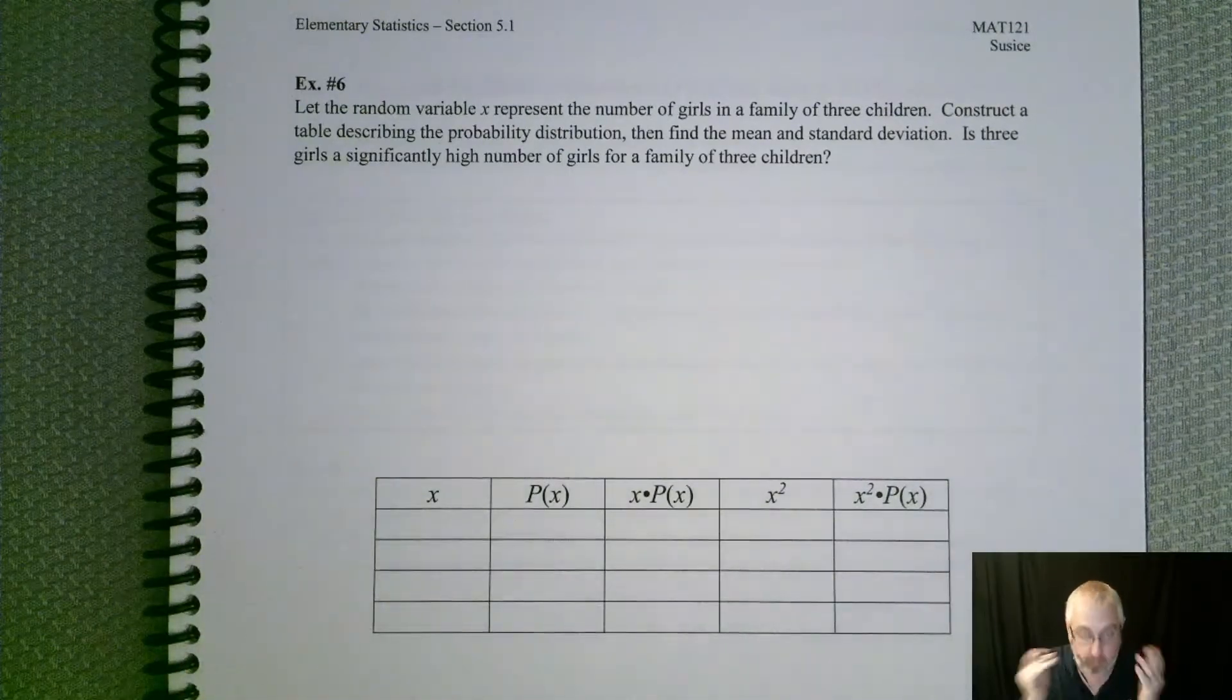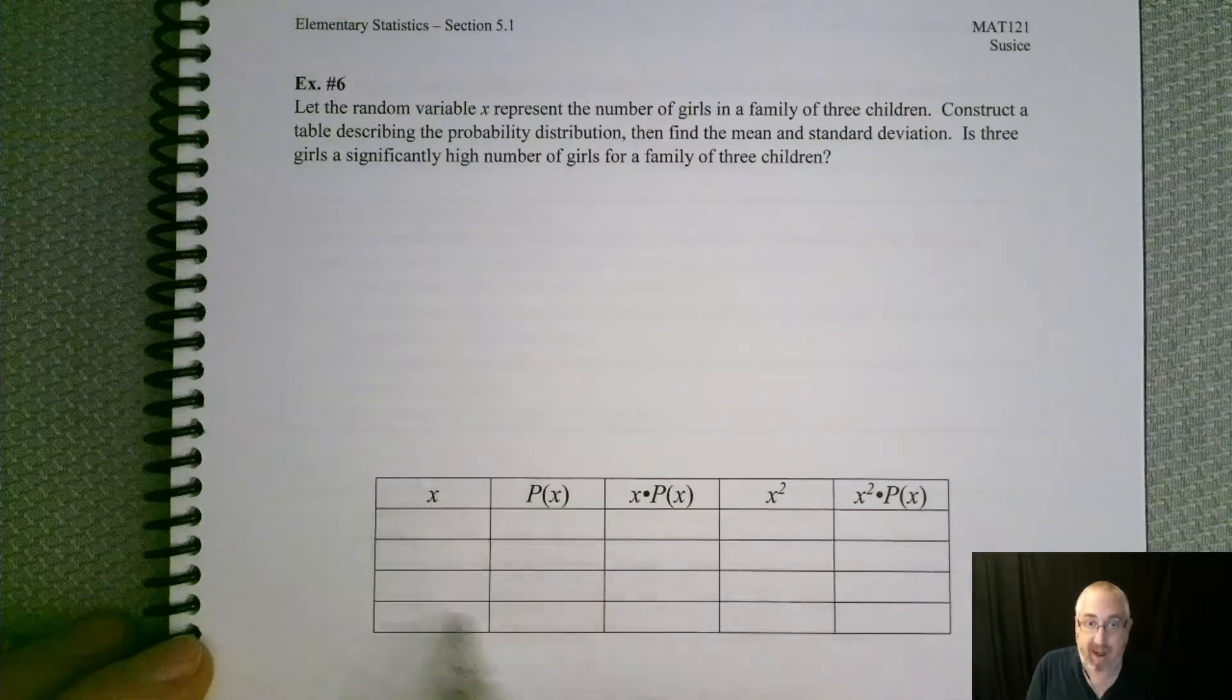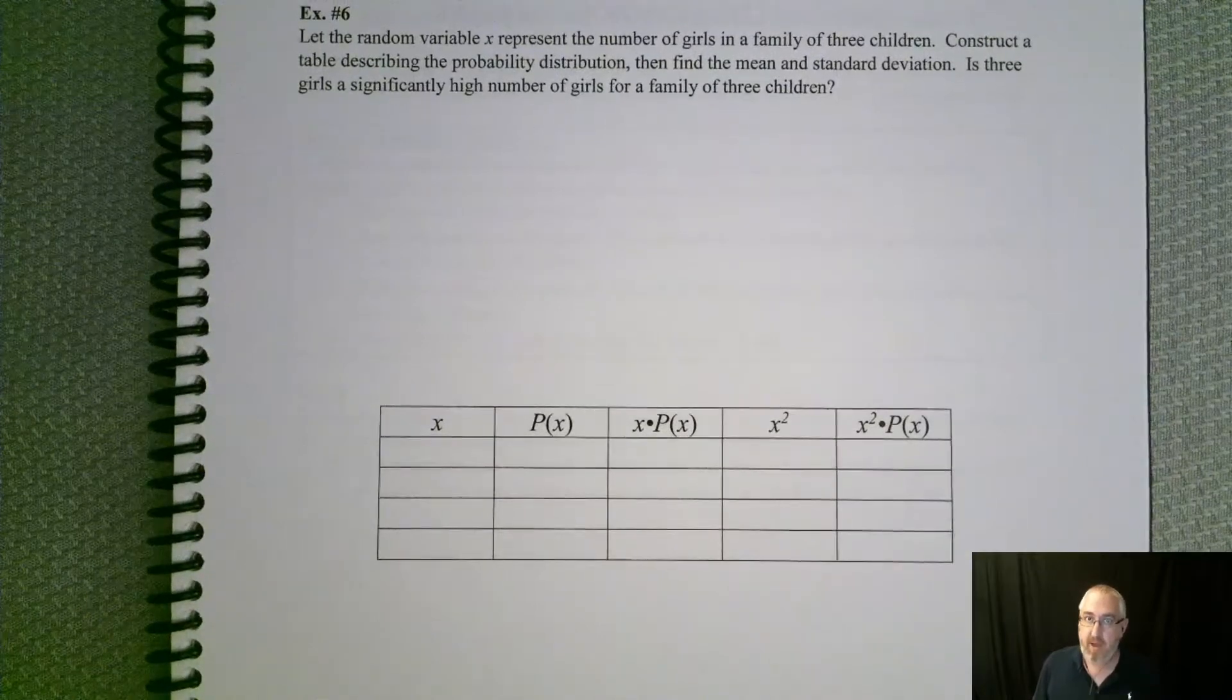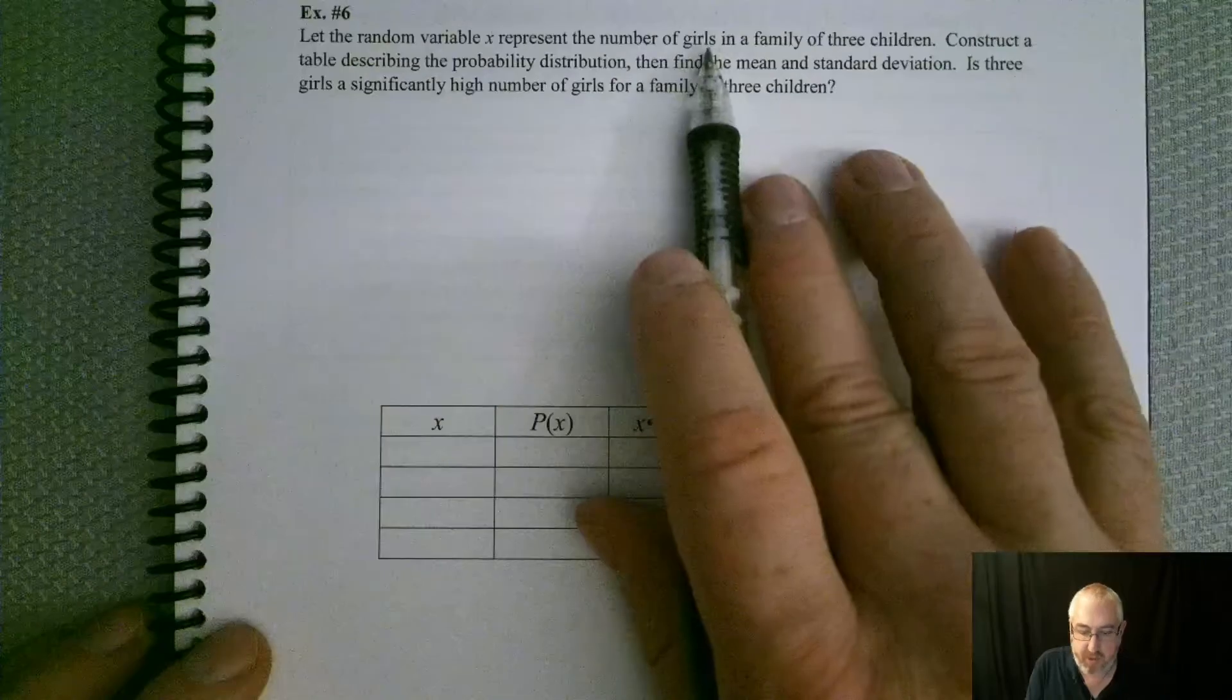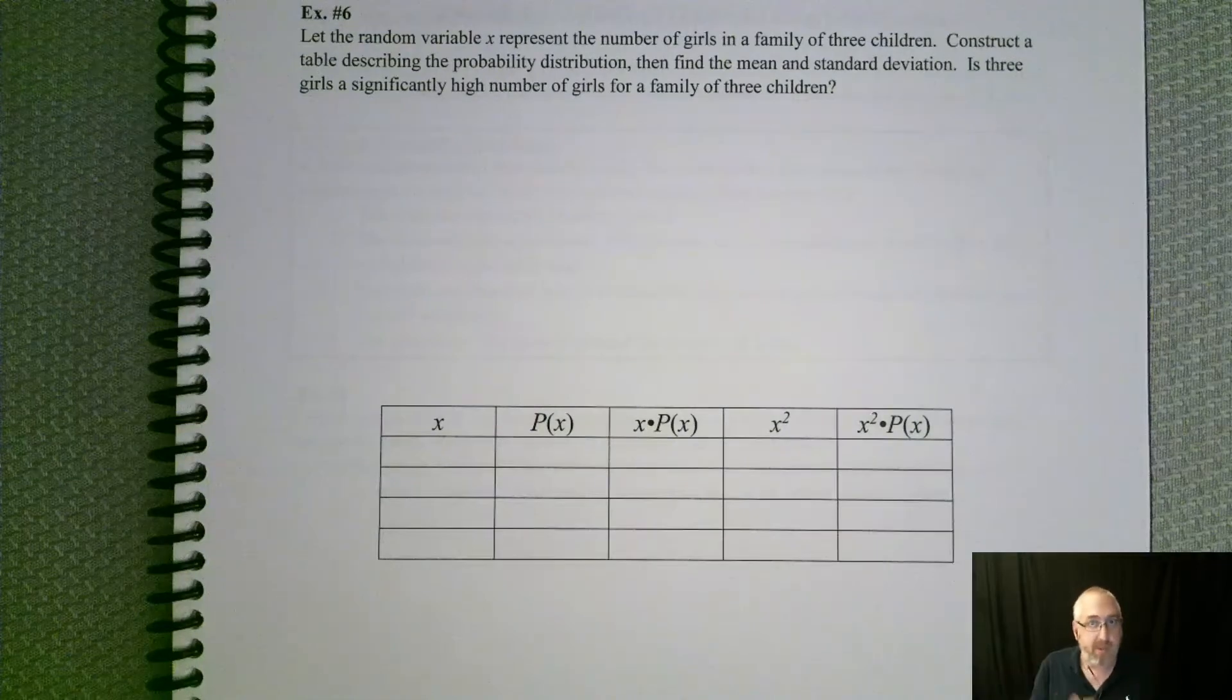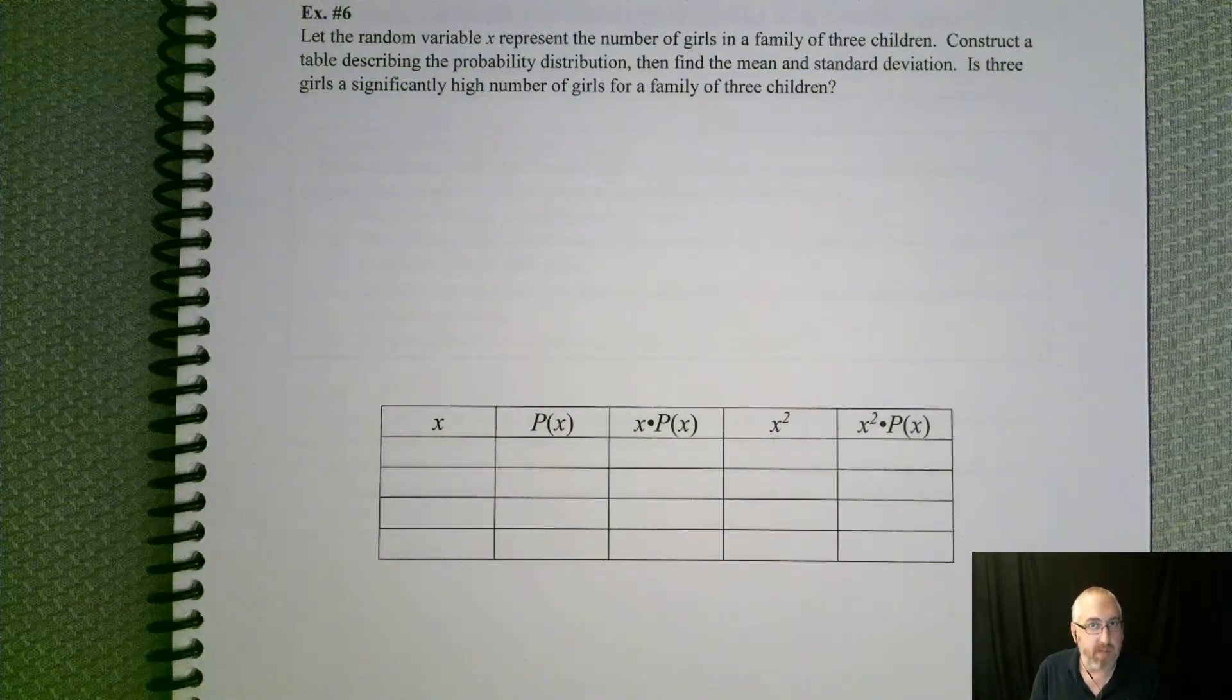All right, so the first thing we have to do is get our x and our p of x filled in for this problem. What possible values of x could we have? We're looking at the number of girls in a family of three children. So what are the different possibilities of girls you could have? Very similar to what we did at the beginning of this section.